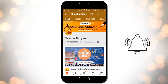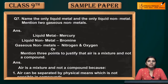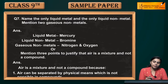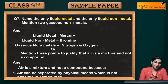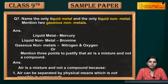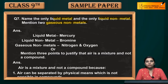Hello students, our next question is question number seven: name the only liquid metal and the only liquid non-metal, and mention two gaseous non-metals. You have to give a liquid metal example and a liquid non-metal example, and give two examples of gaseous non-metals. So what is the metal which loses its electron — which is our only liquid metal?